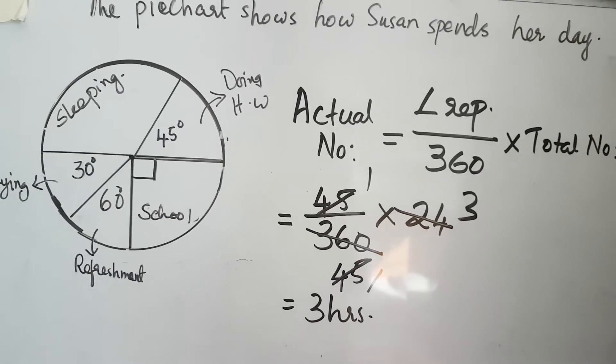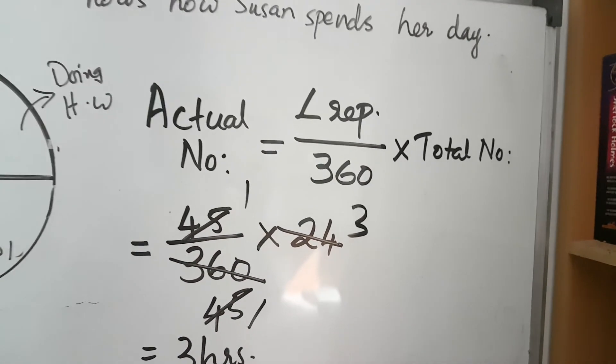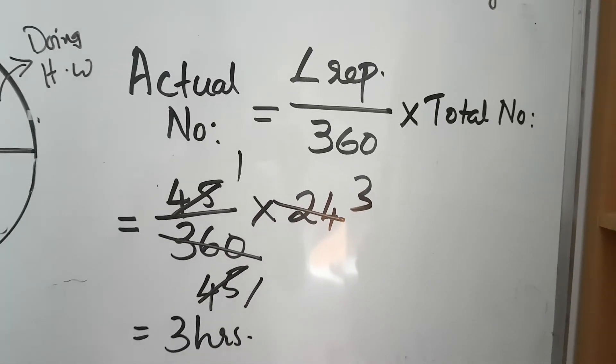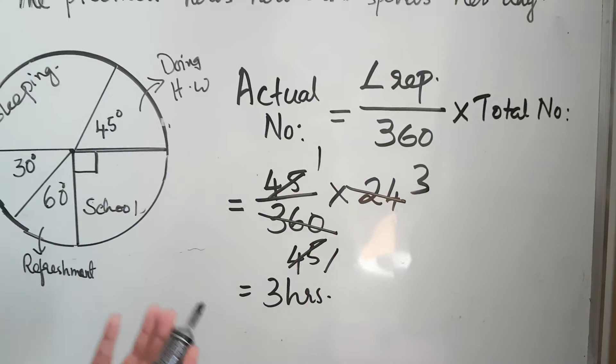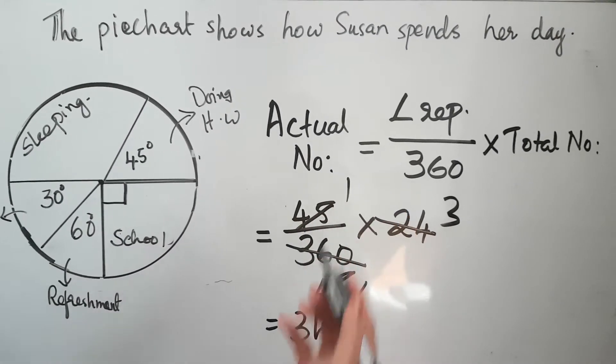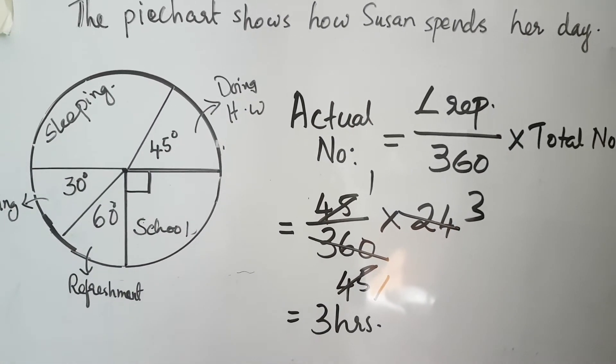Like that, each activity can be calculated in number of hours using the formula: angle representing the activity divided by 360, multiplied by the total number. In some questions, depending upon the pie chart and what it represents, the total number will be given. In this case, no need to give the total number because we know in a day there are 24 hours.